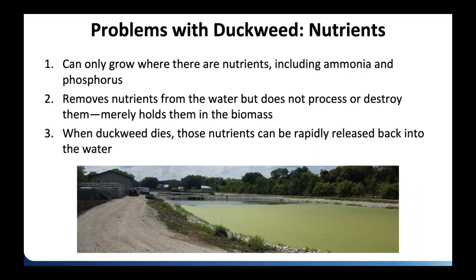One of the biggest problems with duckweed is that it acts as a nutrient sink — similar to algae — sucking up nitrogen and phosphorus from the water. When you kill it with chemicals or it dies off in winter, it sinks to the bottom, becomes part of the sludge blanket, retains all those nutrients, and regrows the next summer. This continually prevents nutrients from leaving your plant, causing a buildup over time that leads to more duckweed or, in some years, algae blooms — which becomes a real problem.